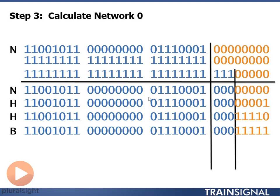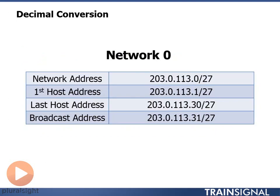Now I have the entire range of addresses for network 0. I have my network address, I have my first host address, I have my last host address, and I have my broadcast address. What I do then is I now know what network number 0 looks like. So network 0 is 203.0.113.0 slash 27. The first host is .1. The last host is .30. And my broadcast address is .31.